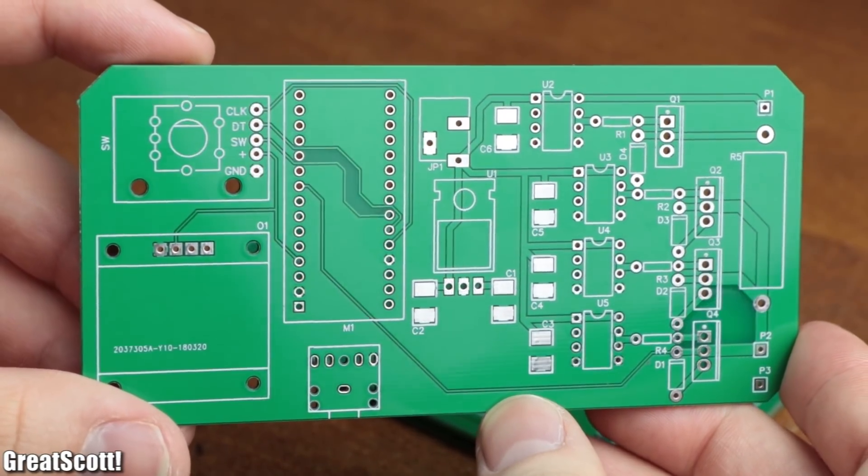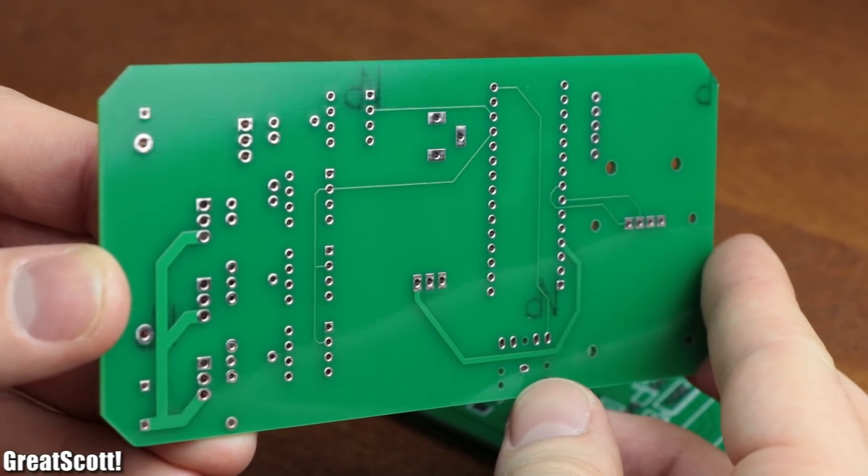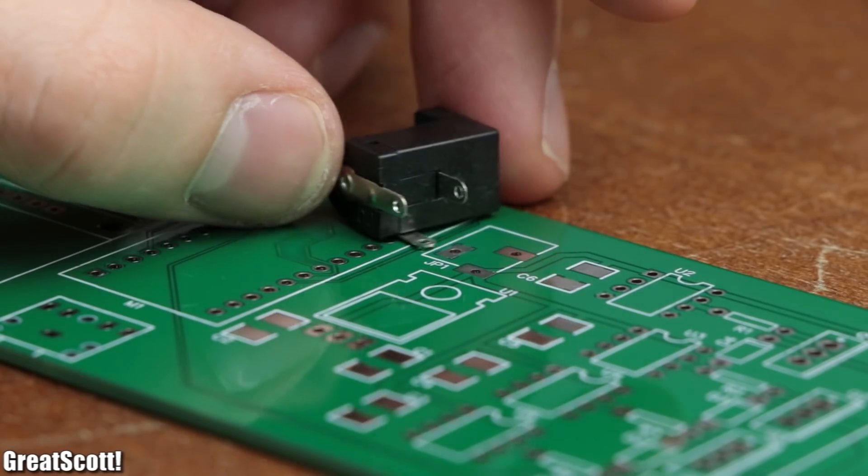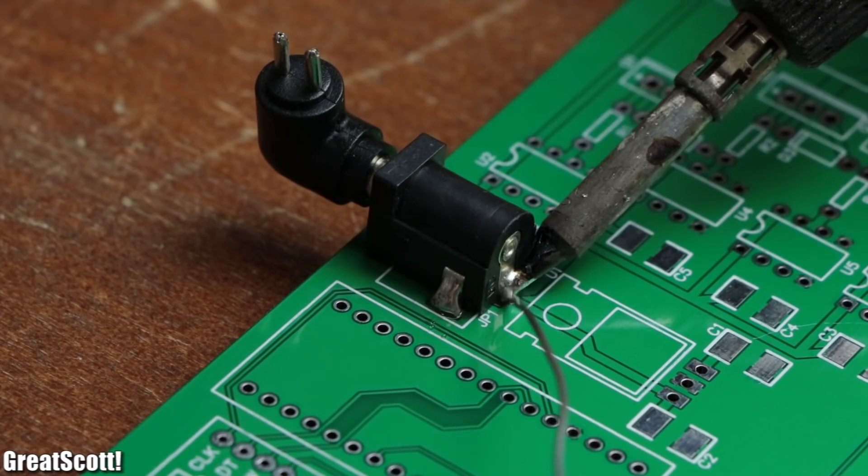Now even though the PCBs looked like they would work without a problem, there still was a problem, which was that I did not use the correct footprint for the DC jack. So I had to enlarge the holes, which did work out eventually.